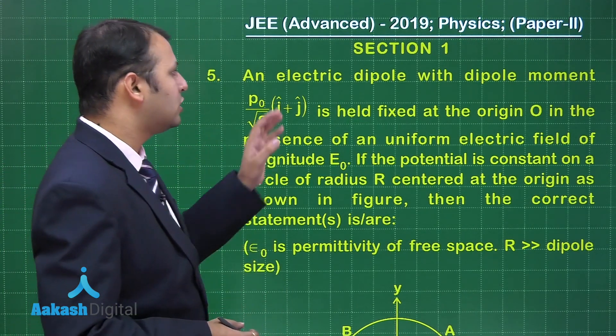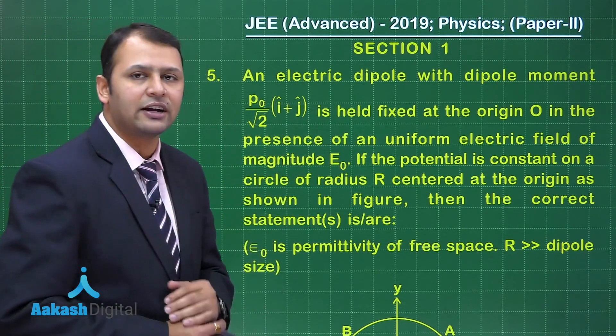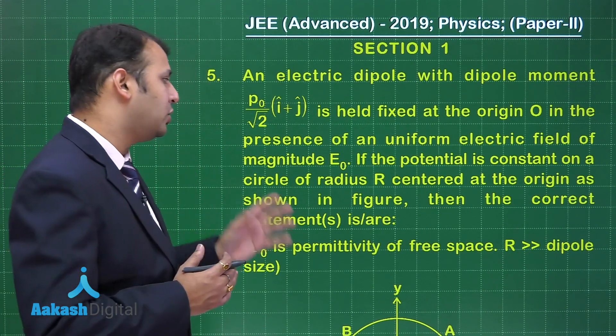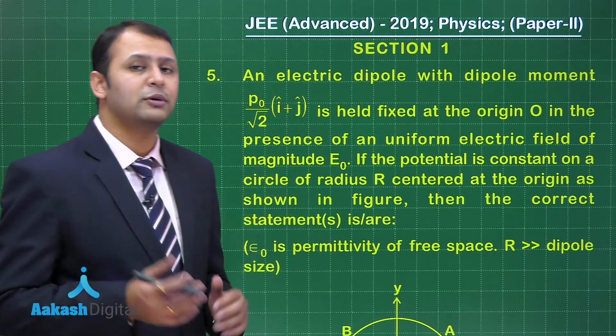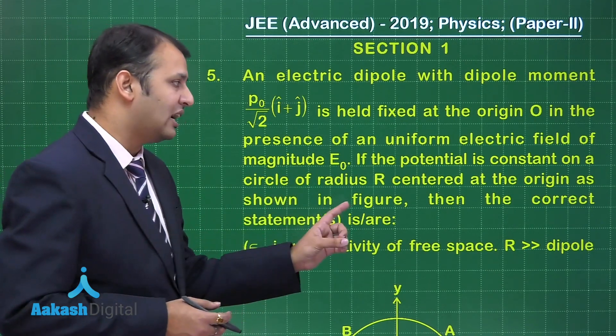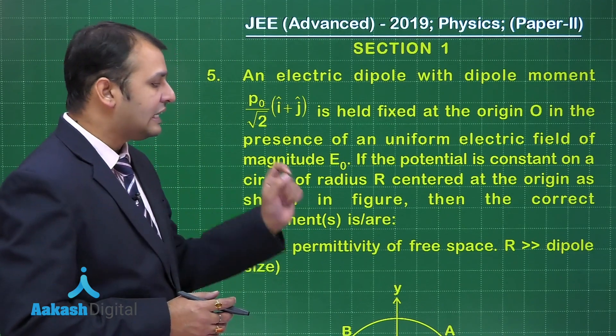The question says an electric dipole with dipole moment of this value is held fixed at origin O in the presence of a uniform electric field E₀, the direction of which is not specified. If the potential is constant on the circle of radius R centered at the origin as shown in the figure, then the correct statement is in R.